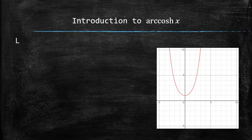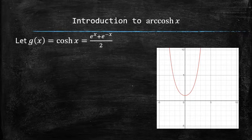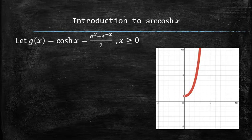Now let's make a new function g of x from the hyperbolic cosine of x function by restricting the domain of the function to only non-negative x values.